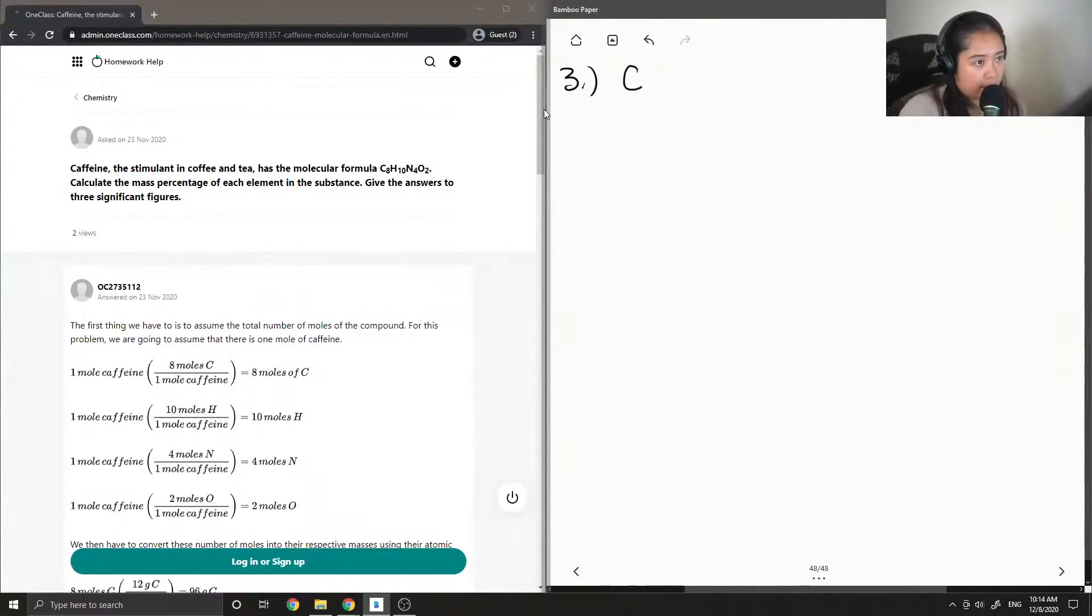Okay, so they give us the formula for caffeine. To answer this question, we want to assume that we have one mole of caffeine. From there, we can calculate the number of moles and then the number of grams of each of the atoms that are present in one molecule of caffeine.